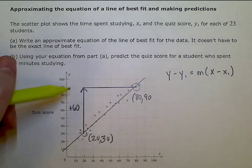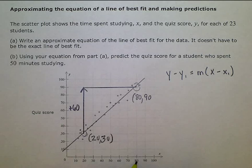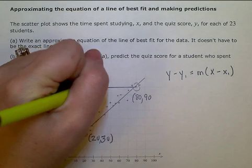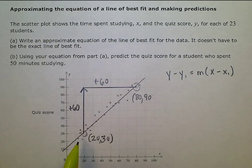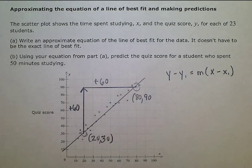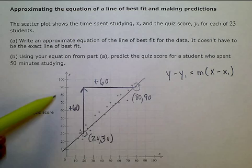And then I'm going from 20 over to 80. So I actually went up 60 over 60. 20 to 80 is 60, 30 to 90 is 60.